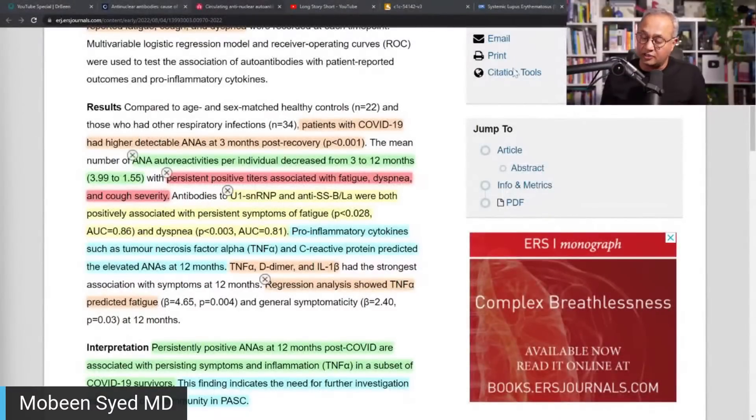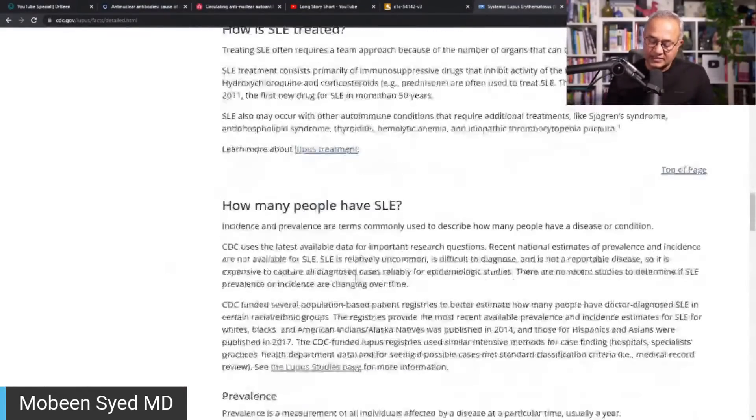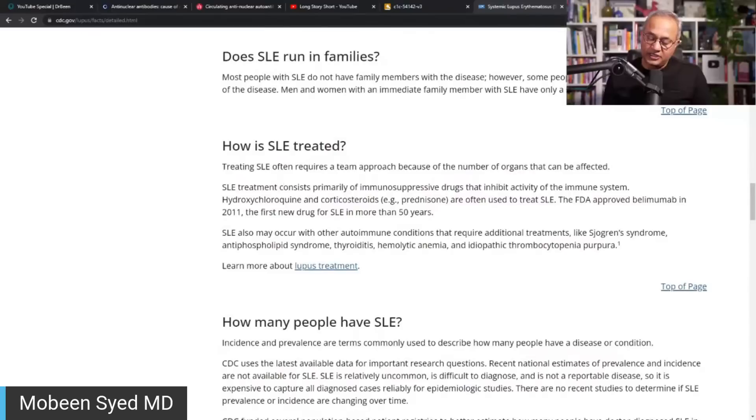And let me show you just in the context of SLE, let me show you how some of this is managed. So if I go to this one and go quickly to the SLE. So look at this SLE. How is SLE treated? Treating SLE often requires a team approach because of the number of organs that can be affected. SLE treatment consists primarily in immunosuppressive drugs that inhibit activity of the immune system, hydroxychloroquine, corticosteroids, and often used to treat SLE. Then FDA has other antibodies approved as well. The point is, especially once again for the providers...